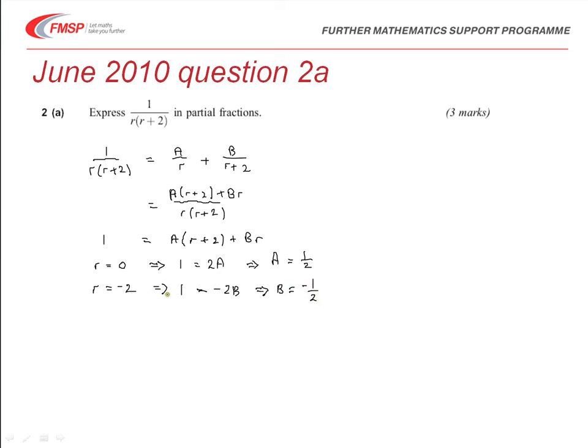And so we now know what the two partial fractions are, because we know 1 over r(r+2) must be equal to, A is a half, so it's 1 over 2r,